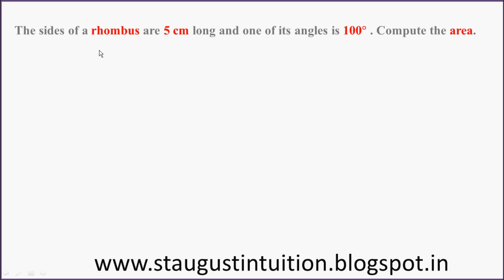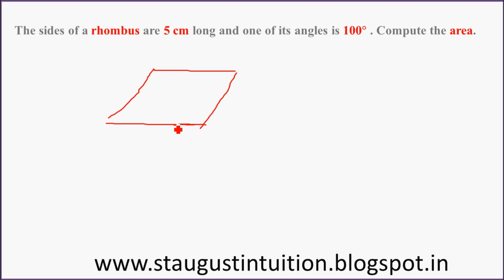So now, what is a rhombus? It's very simple. A rhombus means a parallelogram where all of its sides are equal. Here, the side is 5 cm.